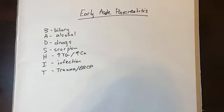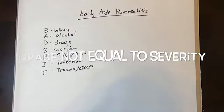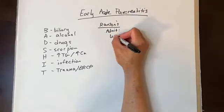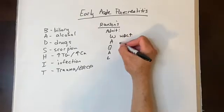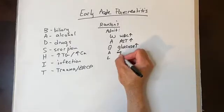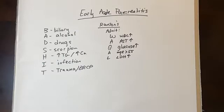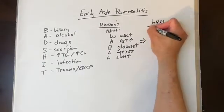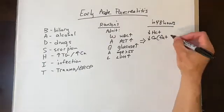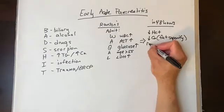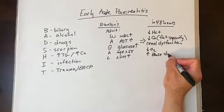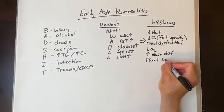Know that the amount of lipase elevation does not correlate to the severity of pancreatitis. Ranson's criteria on admission include: high white blood cell count, elevated AST, high glucose levels, age over 55, and elevated LDH. During the first 48 hours after admission, additional Ranson's criteria include a drop in hematocrit, drop in calcium from fat saponification, renal dysfunction characterized by an increase in BUN, hypoxemia with a decrease in PaO2, increase in base deficit, and excess fluid sequestration.